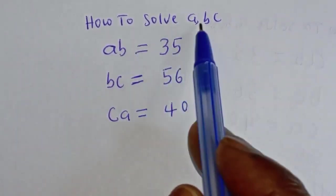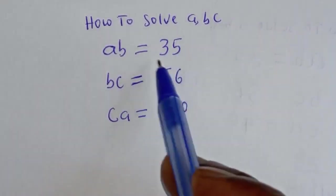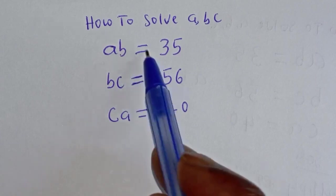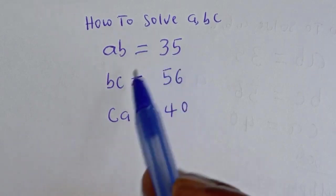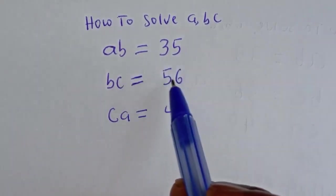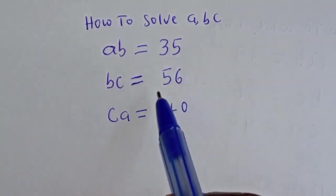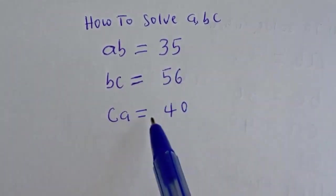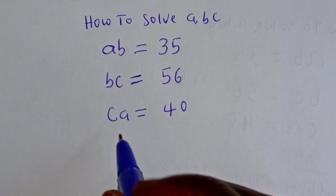How to solve A, B, C from this given equation? AB is equal to 35, BC is equal to 56, and CA is equal to 40.